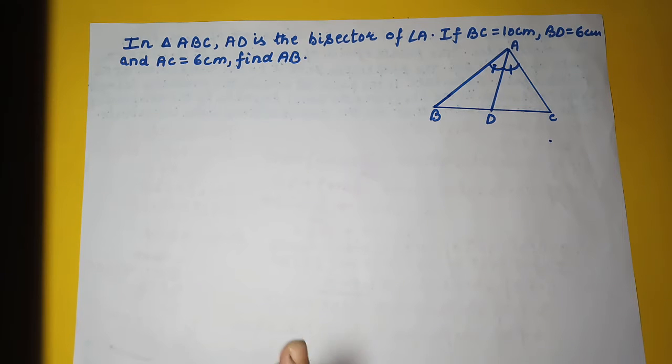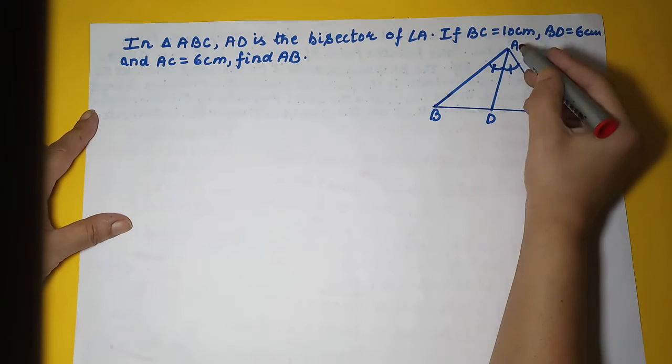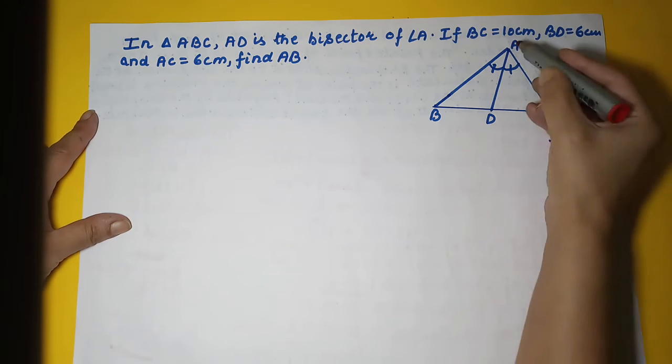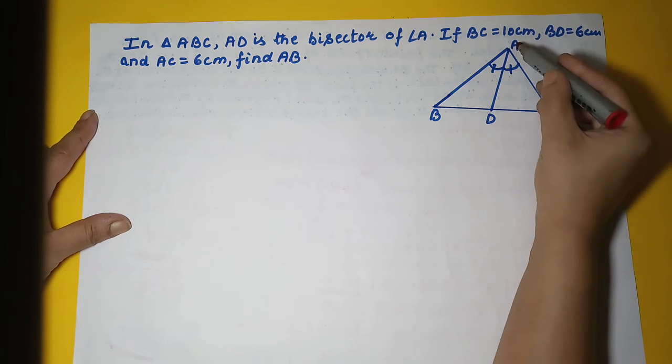We are continuing with the similarity of triangles. In this question, triangle ABC is given and AD is the bisector of angle A.